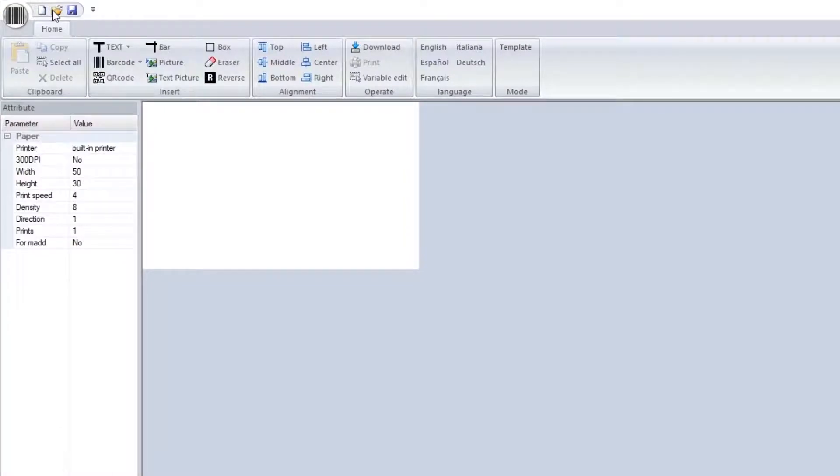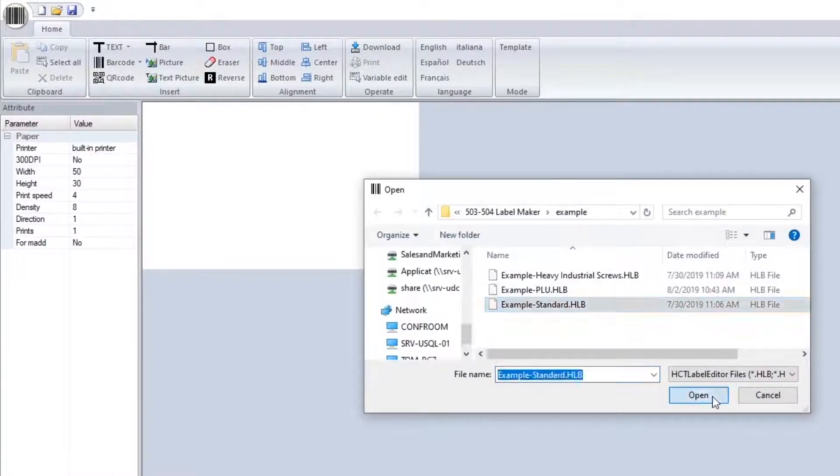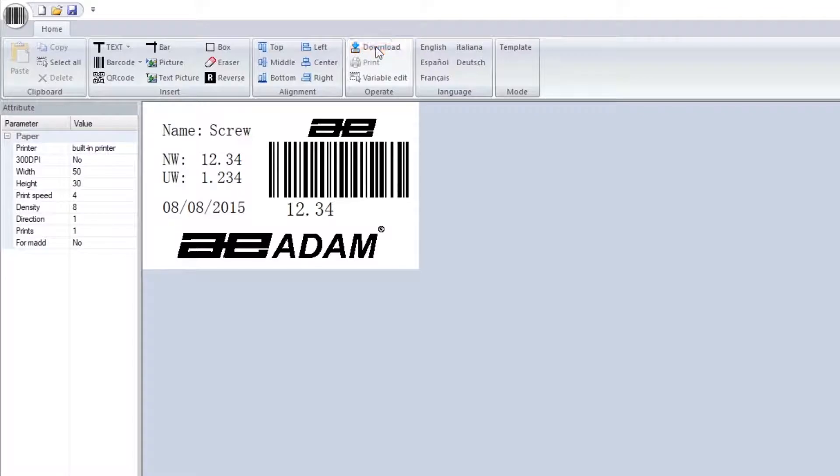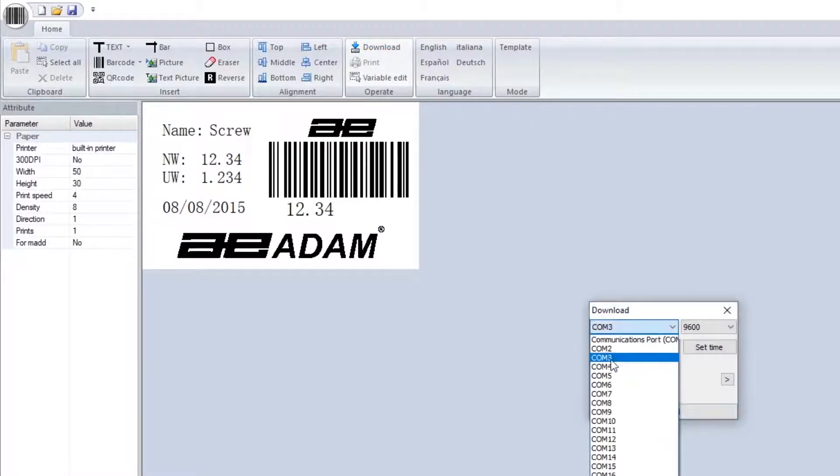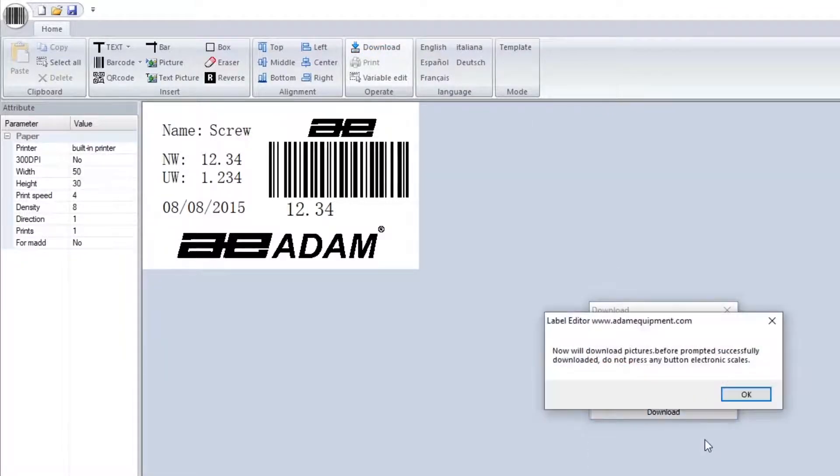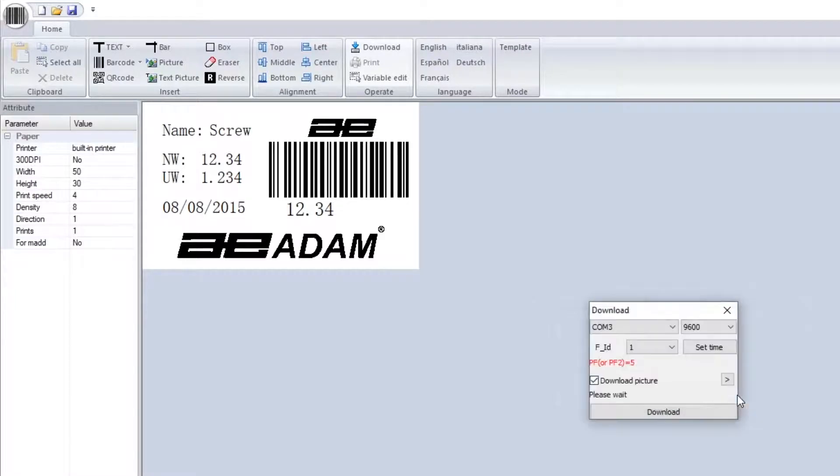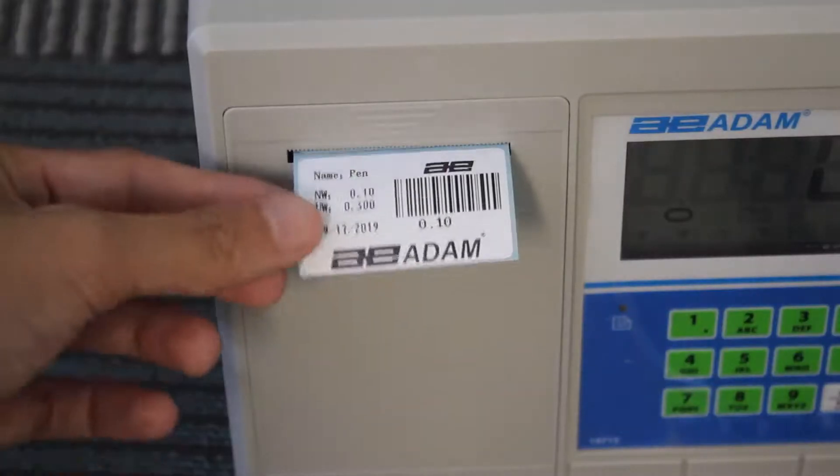The integrated label printer can print weight, QR codes, barcodes and labels in English, Spanish, German or French. Use the indicator in conjunction with your PC to create custom label layouts and add your own logos and images.